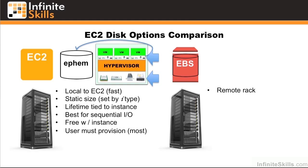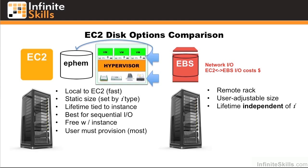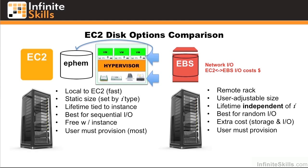EBS, in contrast, exists in a remote rack, which means there's network I/O between the EC2 instance and the EBS volume, and this network I/O is charged. The size of each EBS volume is adjustable, and its lifetime is independent of the instance itself. It's best for random I/O and does have extra cost associated with it for both storage and I/O into and out of the EC2 instance. The user has to provision this disk, but it allows for snapshots and provisioned I/O. You might think EBS volumes are overall slower since they exist in another rack, but because these EBS volumes are so fast, they're actually comparable — and in many cases faster — than the EC2 instance store.